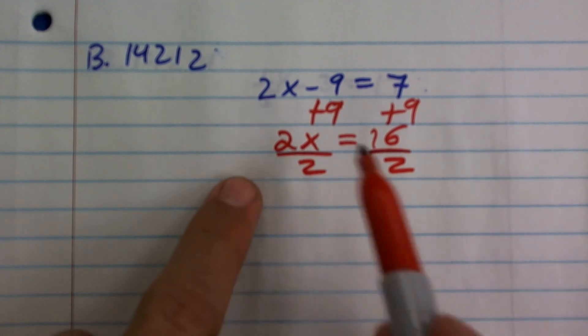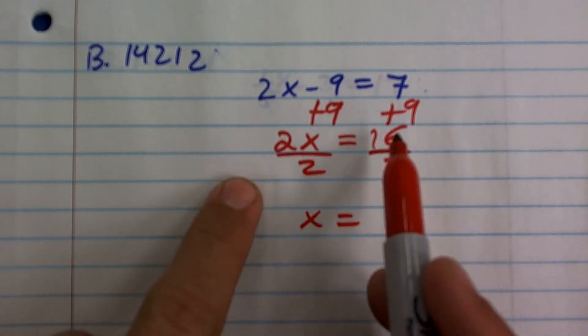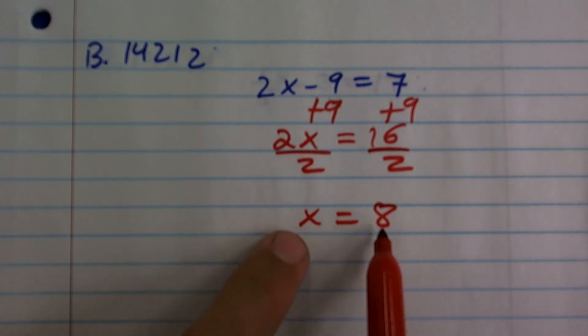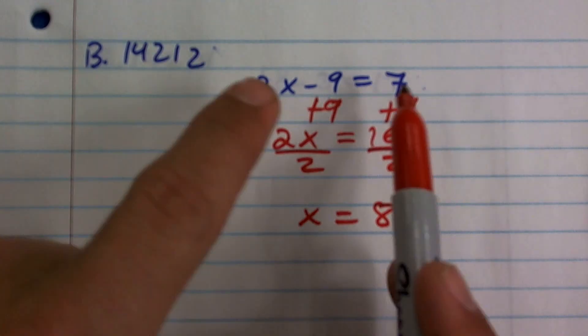2 divided by 2 is 1, 1 times x is x. 16 divided by 2 is 8. So the value of x equals 8 makes this equation true.